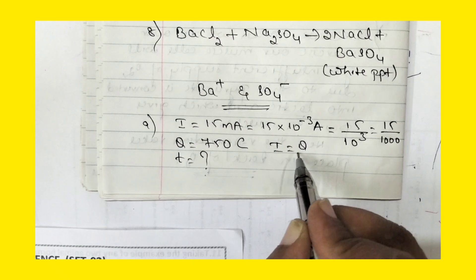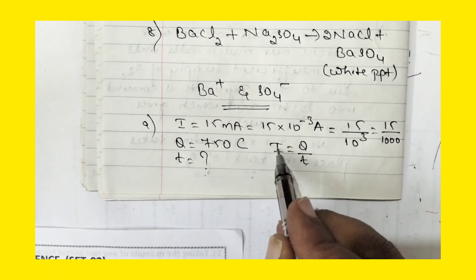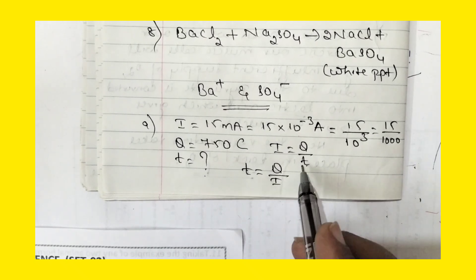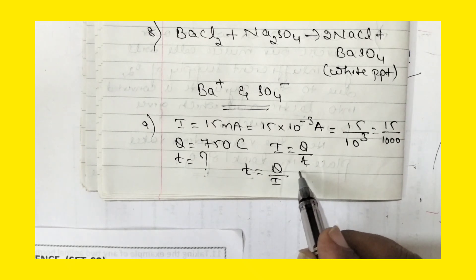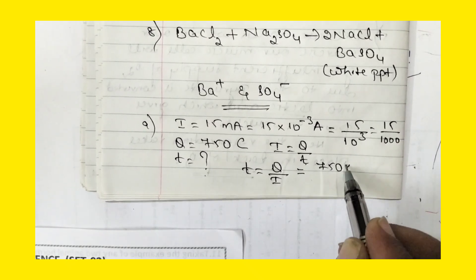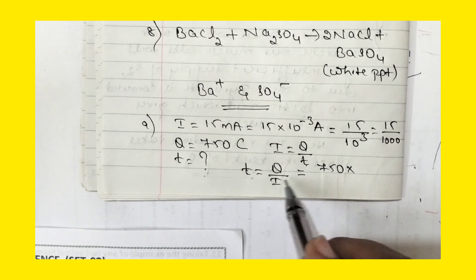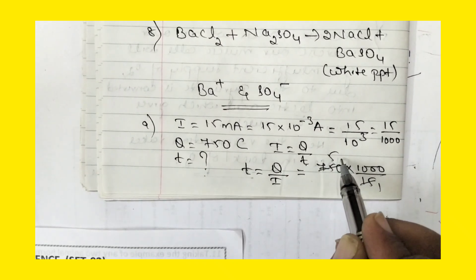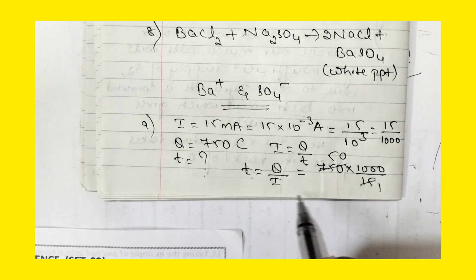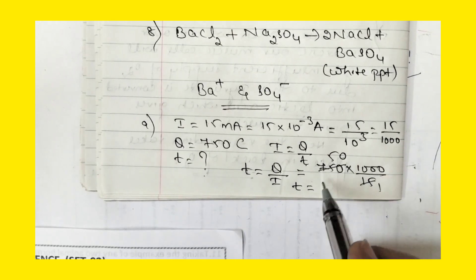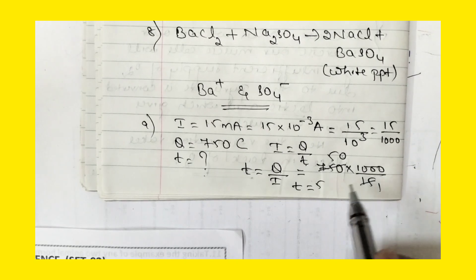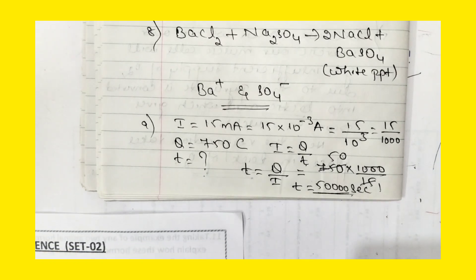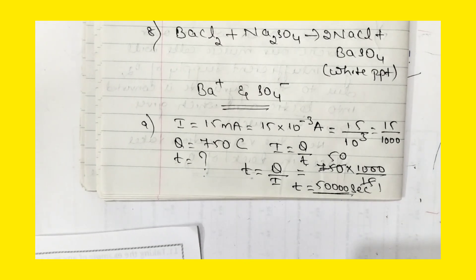Rate of flow of charges is called current. Time T = Q/I. Substituting: T = 750 divided by (15 × 10⁻⁶), which gives T equal to 50,000 seconds.